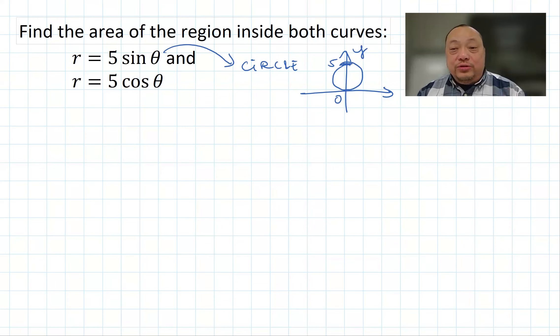And then r equals 5 cosine theta is a circle that passes through the points 0 and 5 on the cosine axis, which is the x-axis. So if you put these together, then we're looking at this area here in between them.